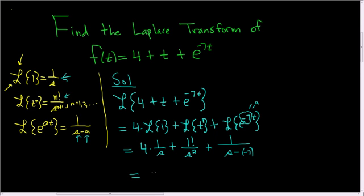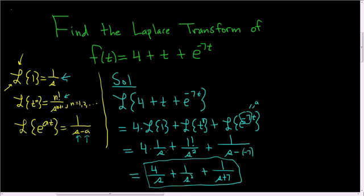So finally, this is equal to 4 over s plus 1 over s squared. And then plus 1 over s plus 7. And that is the final answer. I hope that helps.